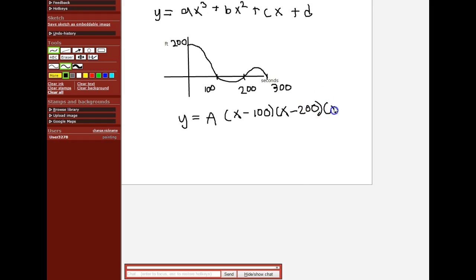Notice that we have x multiplied three times, so it is cubic. Now we don't know what this amplitude is, but we can find it because we have a point: when x is zero, y is 200 feet.